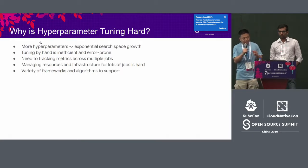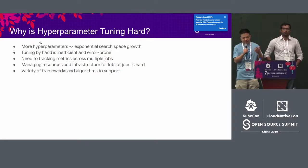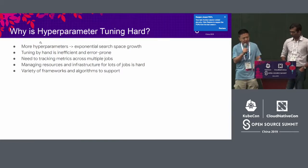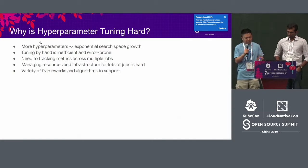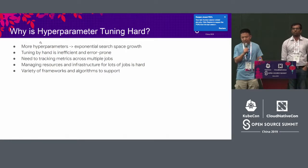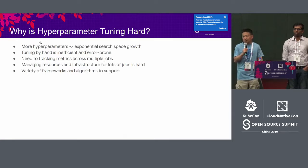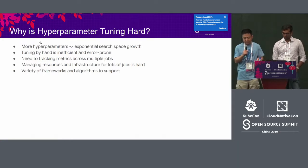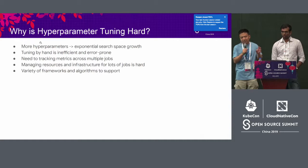You also need to manage resources and infrastructure. Training jobs sometimes require additional hardware and computing resources, so you need to provision and clean up those resources. Finally, there are many different frameworks and algorithms to support. The example we've seen is for MXNet, but you can have TensorFlow or PyTorch models, and algorithms ranging from grid search or random search to Bayesian optimization and others.